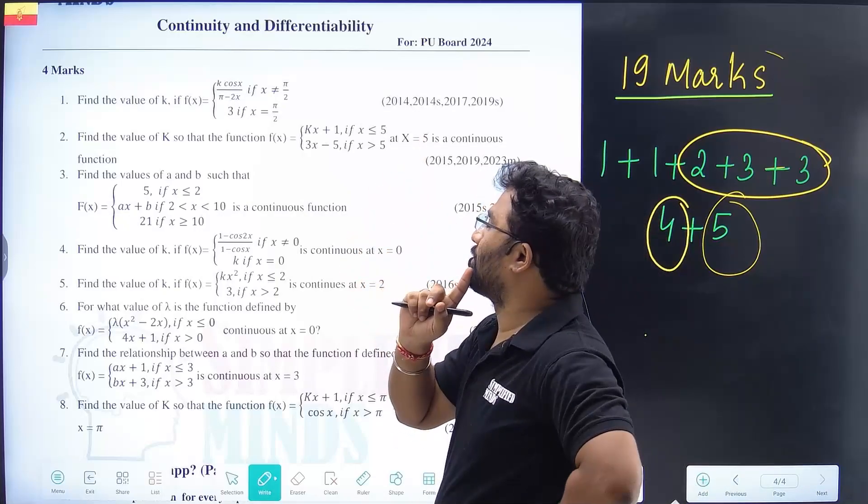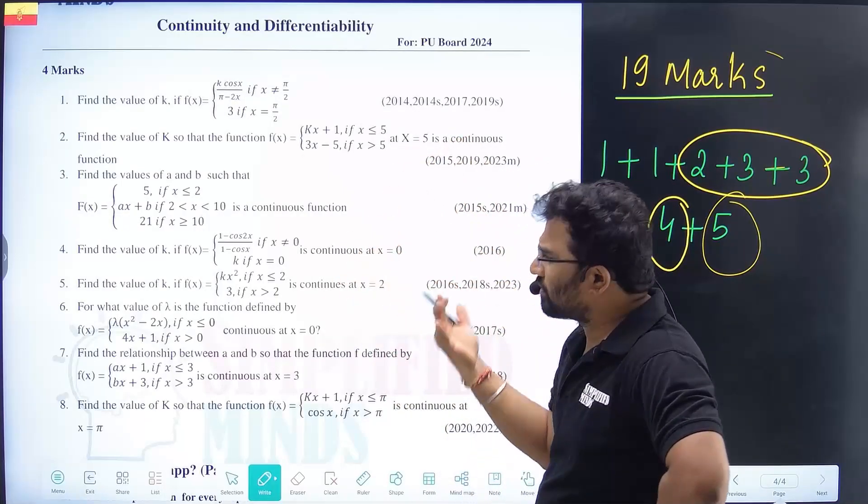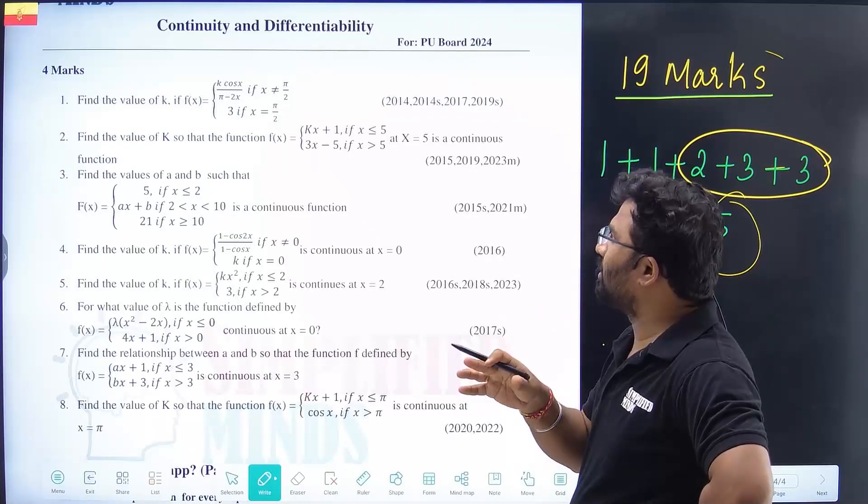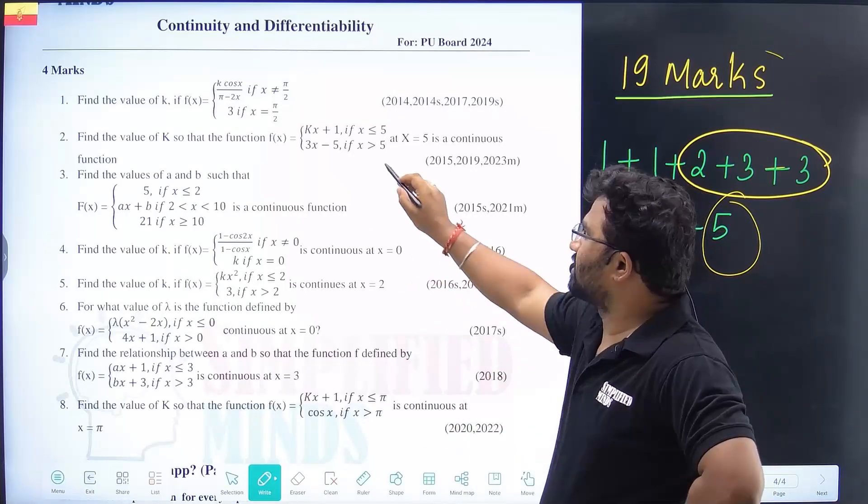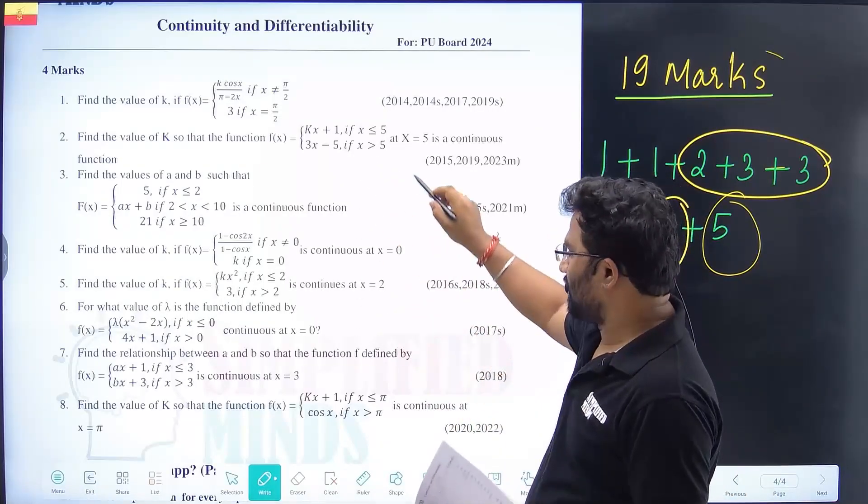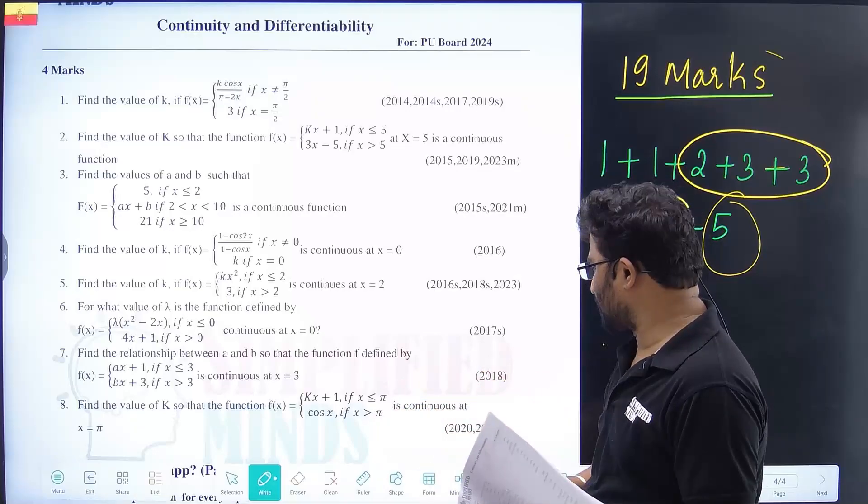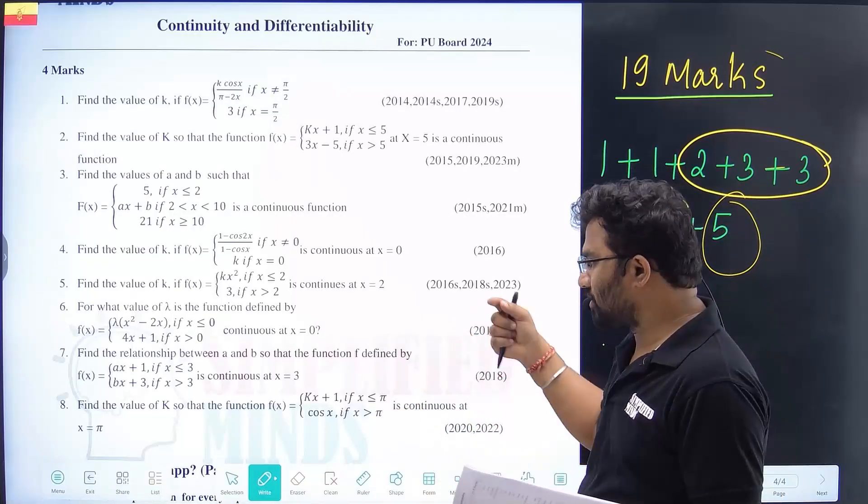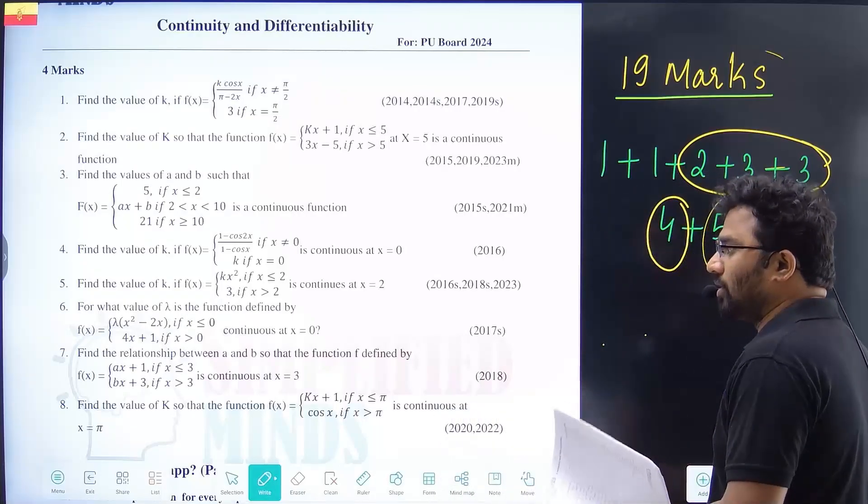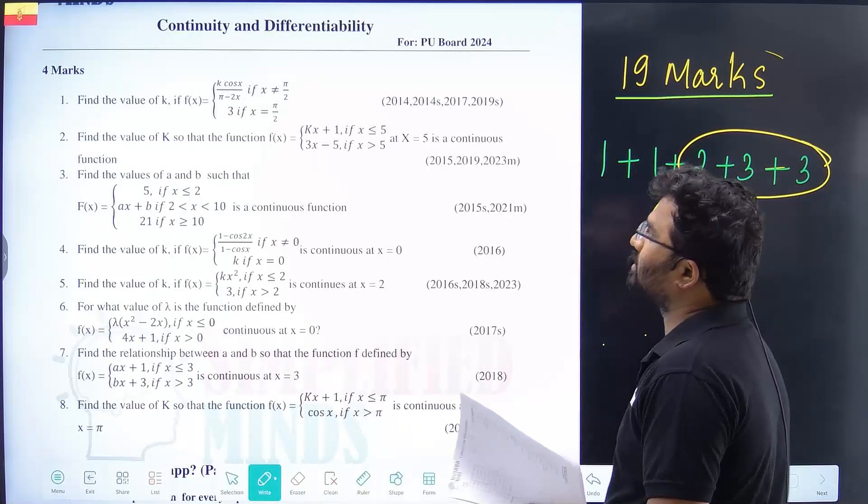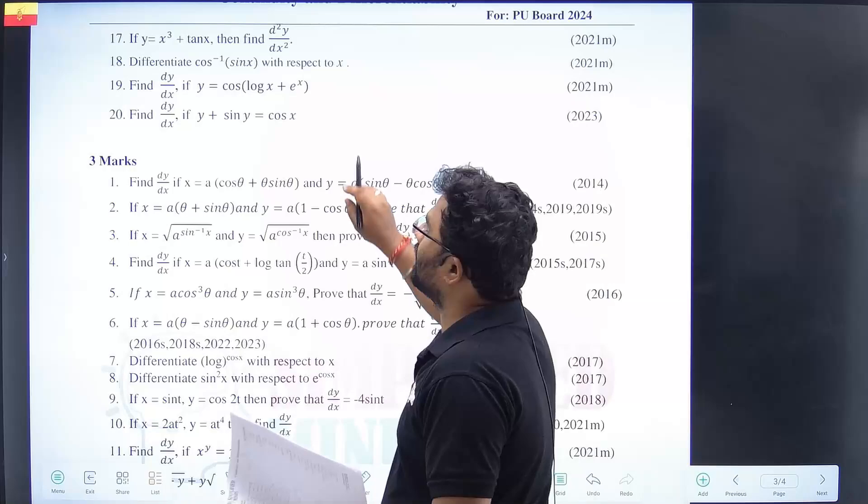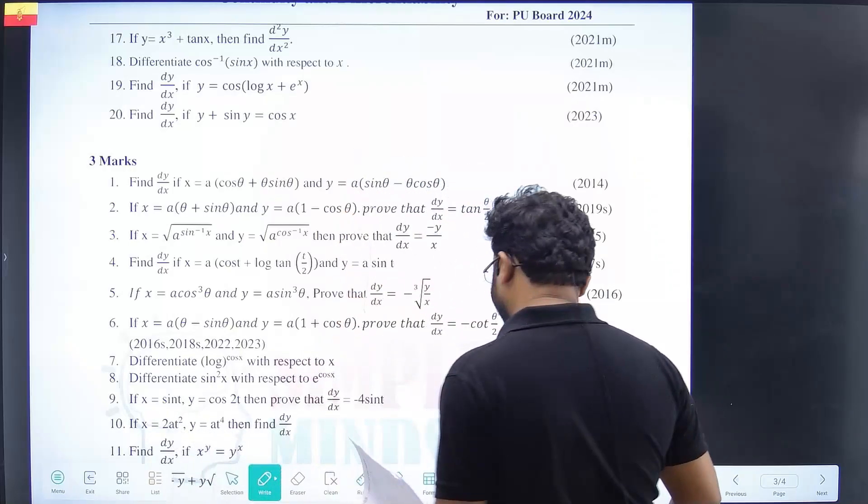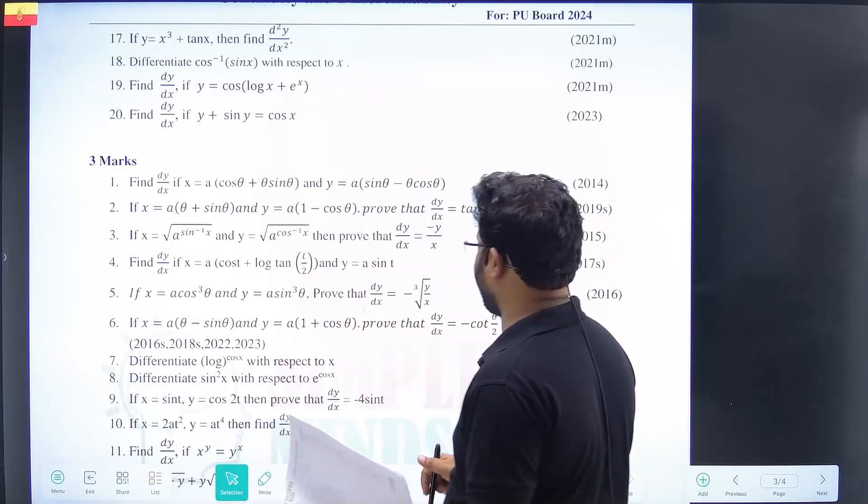Four markers - these questions repeat most of the time. Even in model papers, questions like K cos X repeat. More than sufficient coverage. The lectures will continue. Coming to the next section - the five markers.